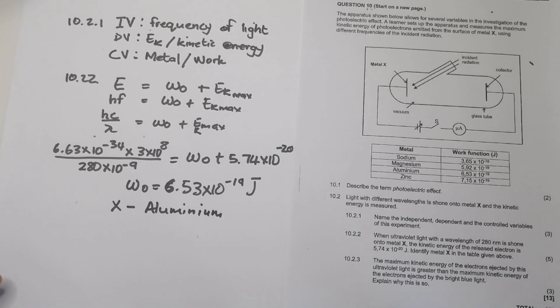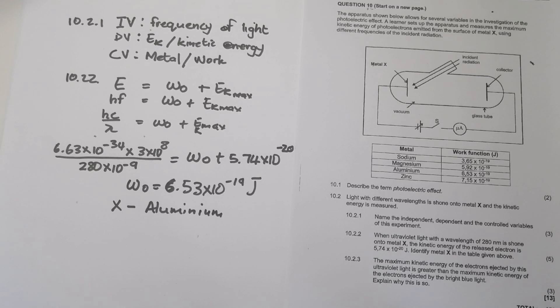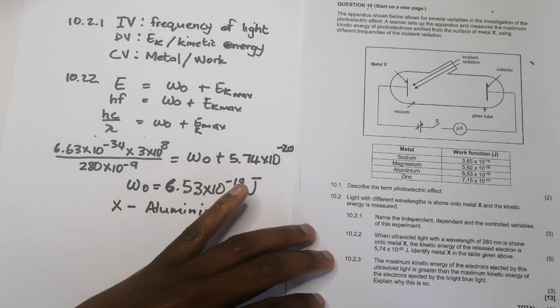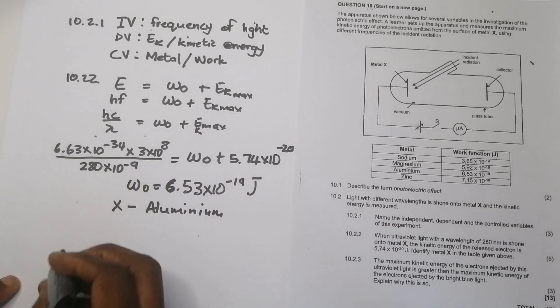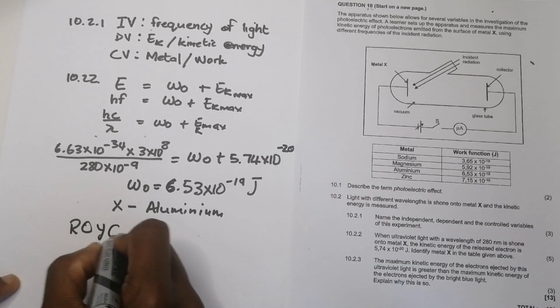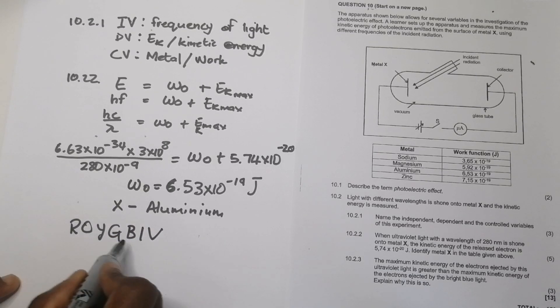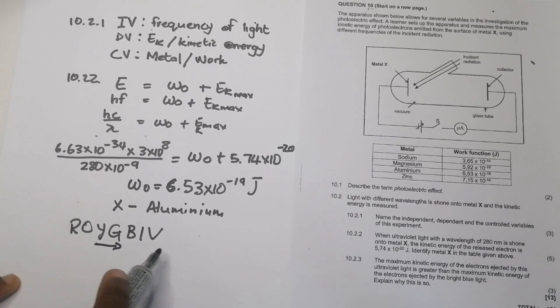All right. As simple as that. OK. And 10.2.3, they say the maximum kinetic energy of electrons ejected by this ultraviolet light is greater, OK, than the maximum kinetic energy ejected by blue light. Explain why this is so. All right. So essentially, they want to know if we use ultraviolet. Now, please remember the visible spectrum, ROY-G-Biv. Here it is here. OK. Remember that as you go in that direction towards violet, the frequency is increasing.